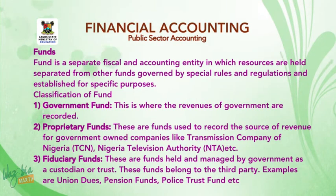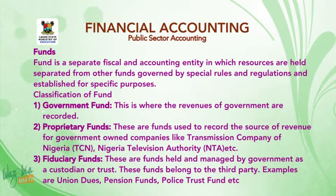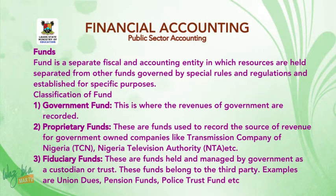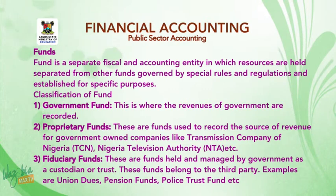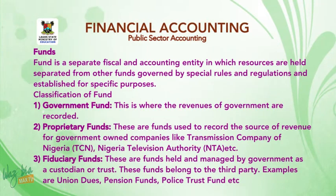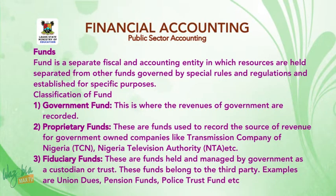Classification of funds: One, government funds — this is where the revenues of government are recorded. Two, proprietary funds — these are funds used to record the source of revenue for government-owned companies, like the Transmission Company of Nigeria (TCN) and the Nigerian Television Authority (NTA). Three, fiduciary funds — these are funds held and managed by the government as a custodian or trust. These funds belong to a third party; examples are union dues, pension funds, and the police trust fund.